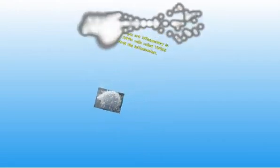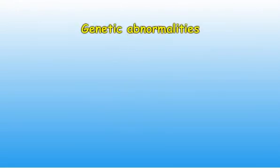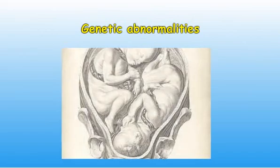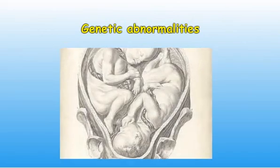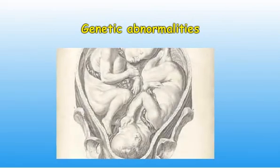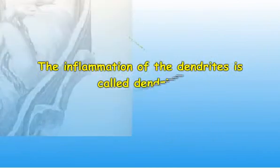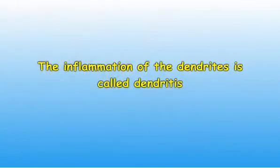Genetic abnormalities are also increasingly being discovered in psychiatric disease, which explains why identical twins often both have the same psychiatric disorder. The inflammation of the dendrites is called dendritis, as in medicine, inflammation of a structure is preceded by the suffix '-itis'.